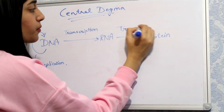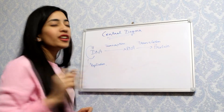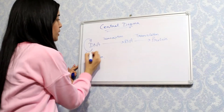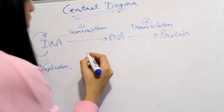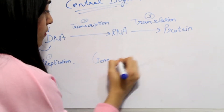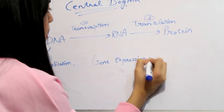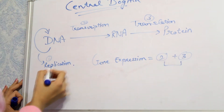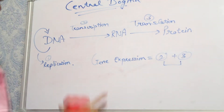If we talk about gene expression, it is slightly different from central dogma. Central dogma consists of three steps: replication, transcription, and translation. But gene expression only has two stages — transcription plus translation. Replication is not included in gene expression.